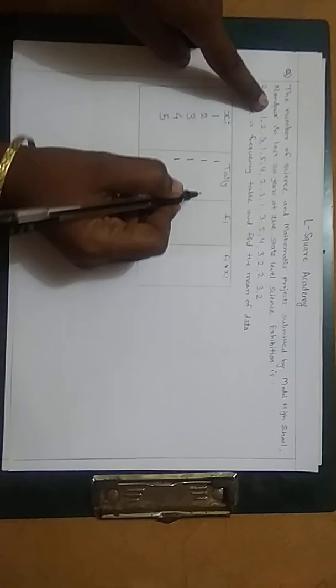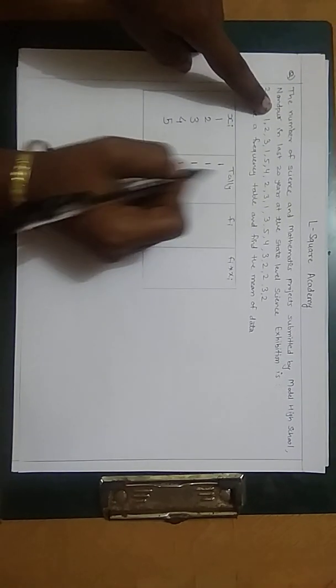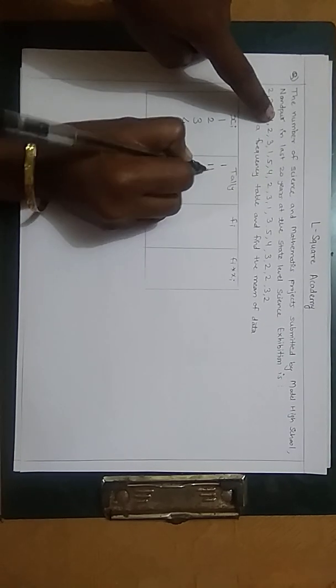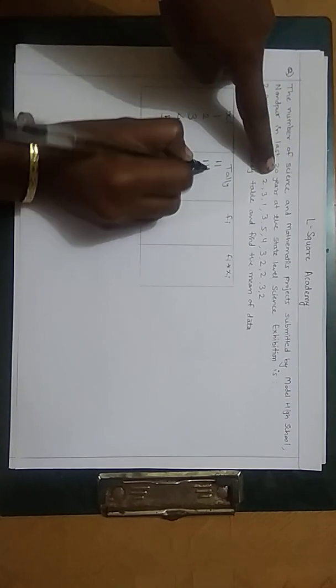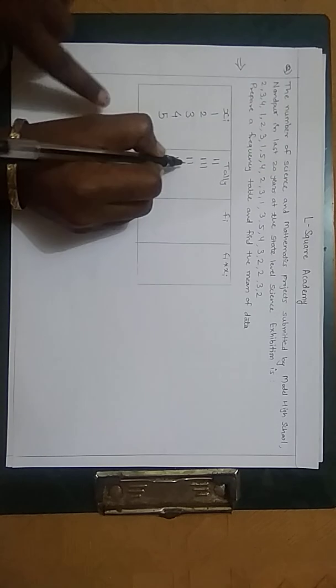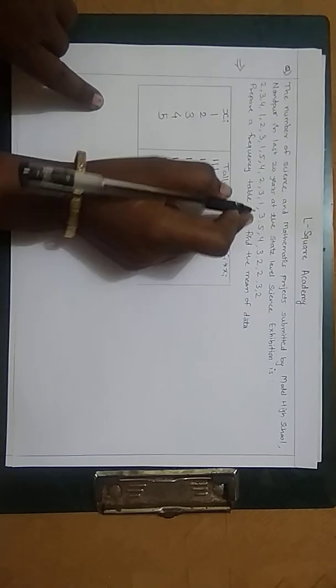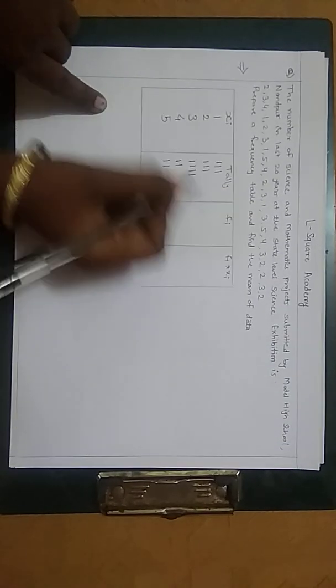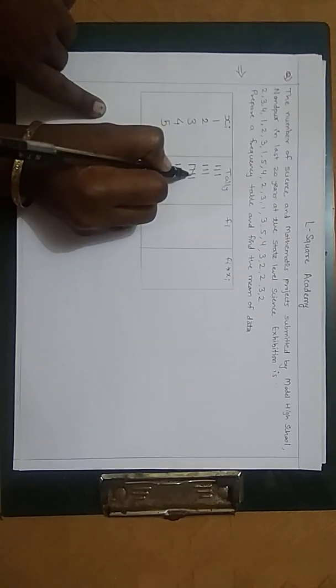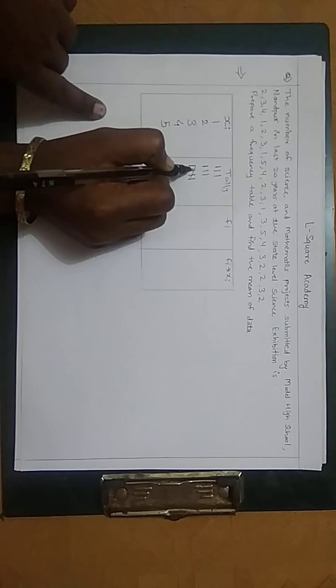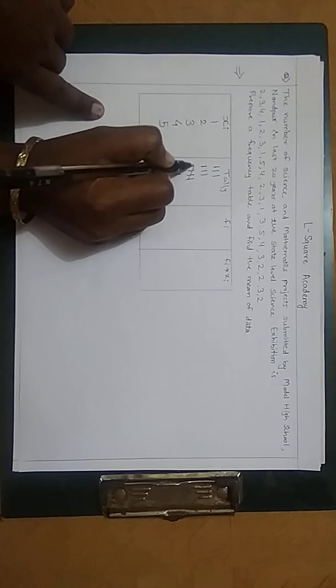Like this we have to write this data in the tally column. So 2 is here, 3 is here, 1, 5, 4, 2, 3, 1, 3, 5, 4, 3. When it is the 5th time, then this should be a cross line. So 1, 2, 3, 4, and the 5th one should be a cross line, then 2, 2, 3, and 2.